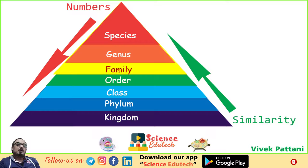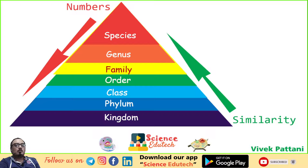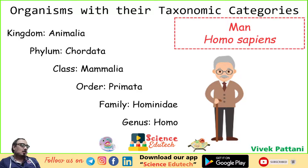A genus may have one or more than one specific epithets representing different organisms but having morphological similarities. For example, Panthera has another specific epithet called tigris, and Solanum includes species like nigrum and melongena. Similarly, Homo sapiens is the case for human beings. Now let us discuss some examples of how taxonomic categories can be used for classifications.